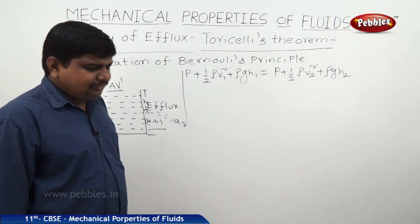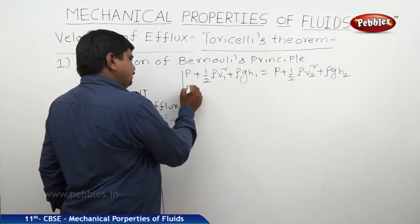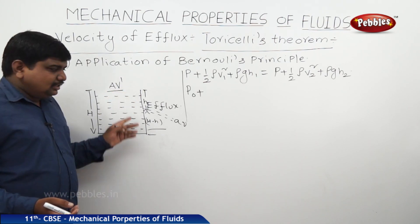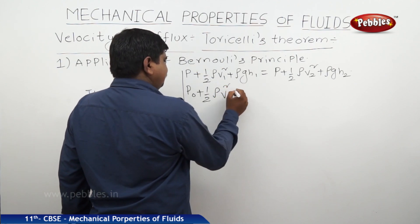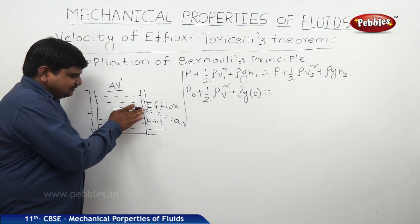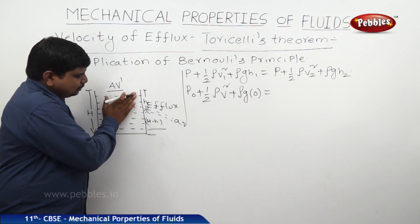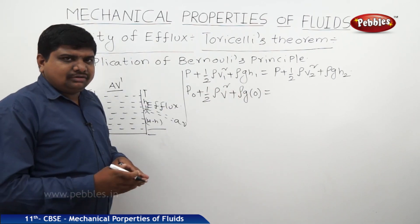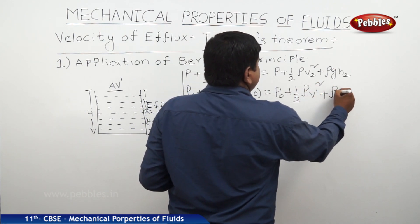We should substitute the relevant terms into Bernoulli's equation. The pressure at both ends is atmospheric pressure P0, because the atmosphere is exerting pressure on the liquid, which causes the efflux. Since the water has leaked out up to the level of the hole, the hole becomes a free surface with no liquid above it. Therefore, we substitute H equals 0 at the hole level.